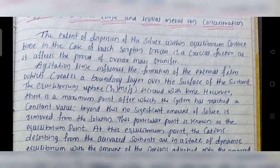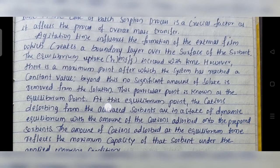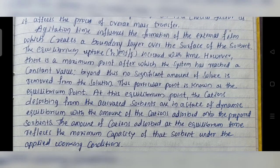Agitation time influences the formation of an external film which creates a boundary layer over the surface of the sorbent. The equilibrium uptake qt (mg/g) increased with time; however, there is a maximum point after which the system reaches a constant value. Beyond this, no significant amount of solute is removed from the solution. This particular point is known as the equilibrium point.